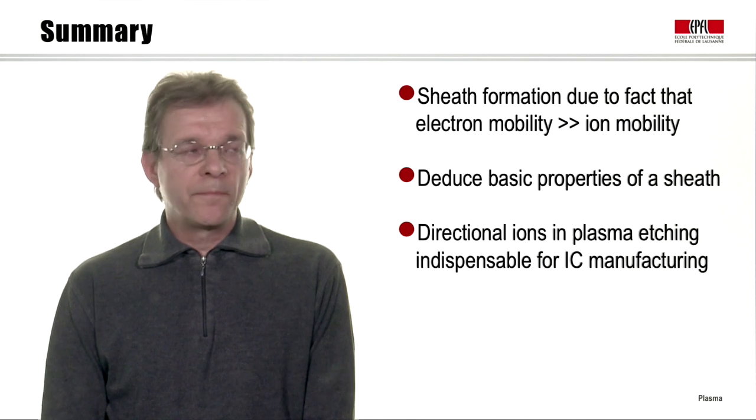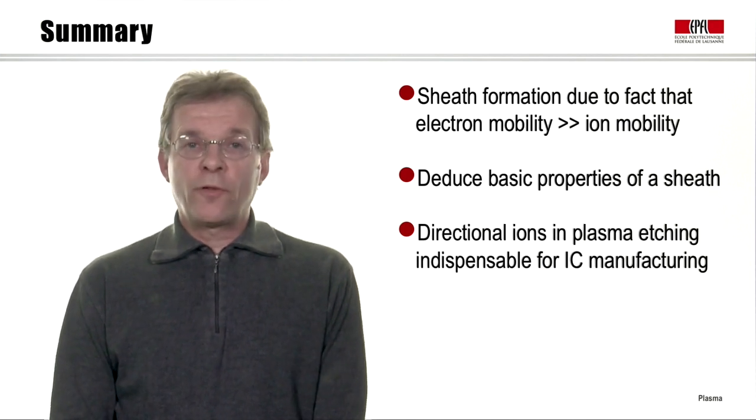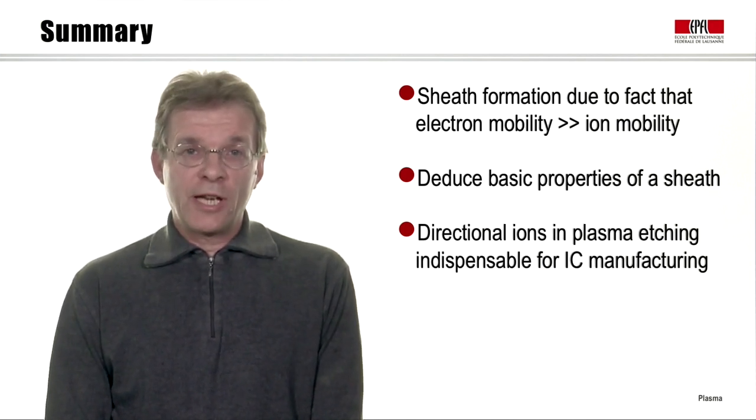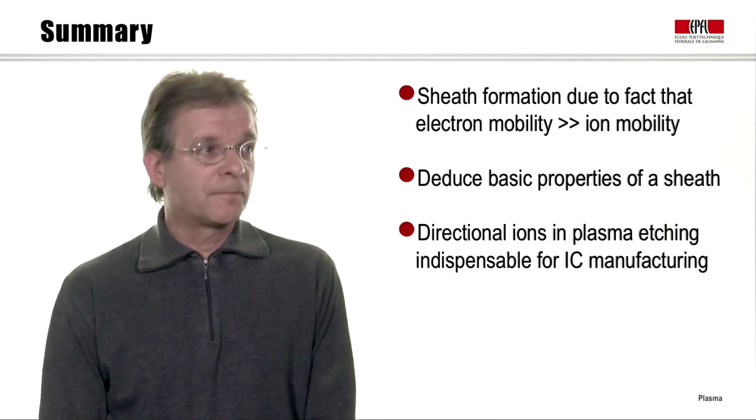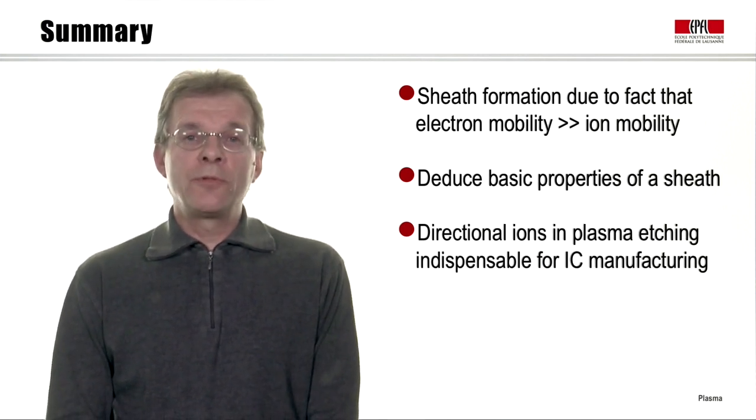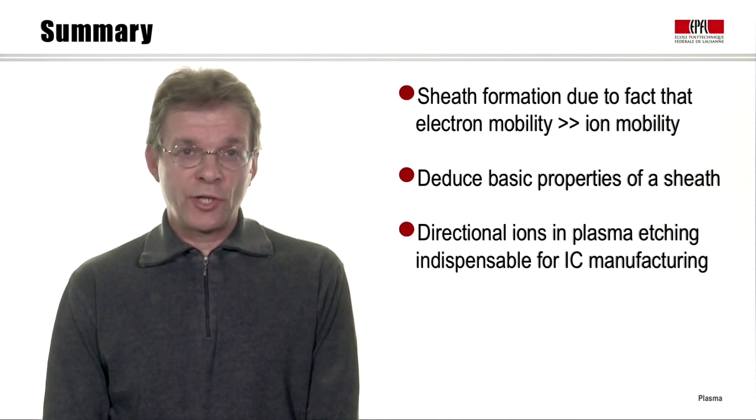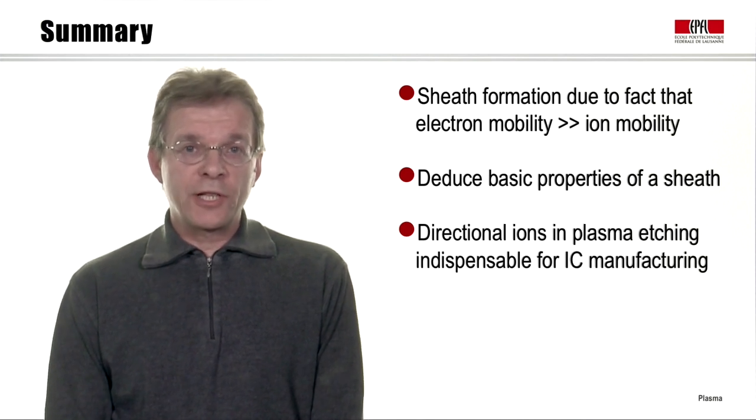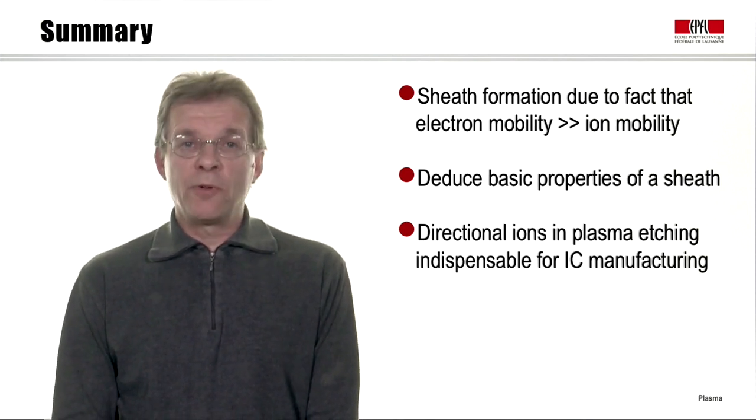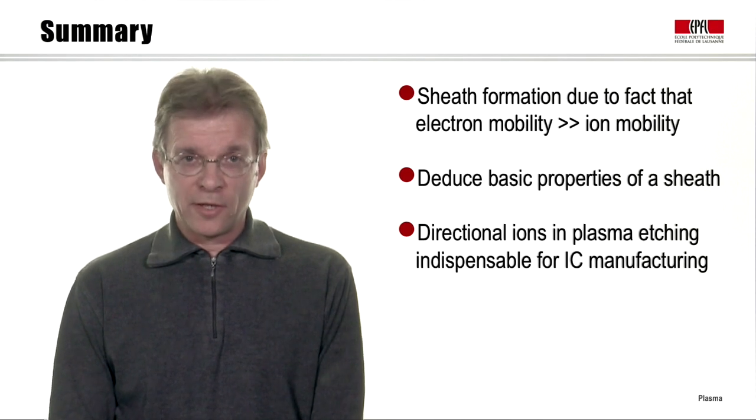To summarize this module, we have seen that sheath formation is due to the fact that the electron mobility is much greater than the ion mobility. From this, we were able to deduce the basic properties of a sheath. And we have seen that the directional ions crossing a sheath is indispensable for integrated circuit manufacturing.